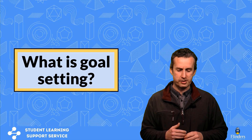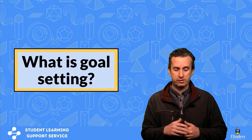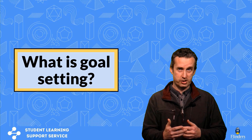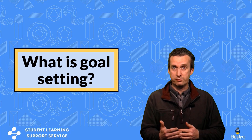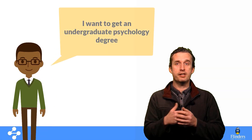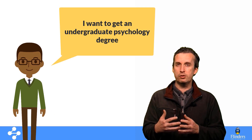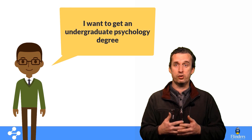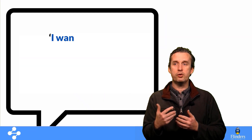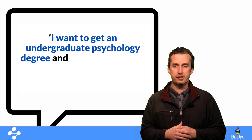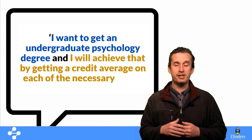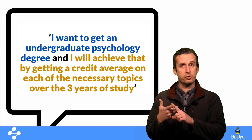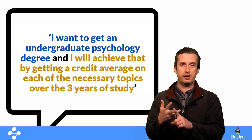So we'll start with what is goal setting. At its simplest, goal setting is the process of identifying something that you want to accomplish or achieve and then outlining a plan to achieve it. For example, I want to get an undergraduate psychology degree — that's a goal, but it doesn't include any detail about how we're going to get there. So instead: I want to get an undergraduate psychology degree and I will achieve that by getting a credit average on each of the necessary topics over the three years of study. So we have an outcome we want to achieve and a basic plan for how to get there.